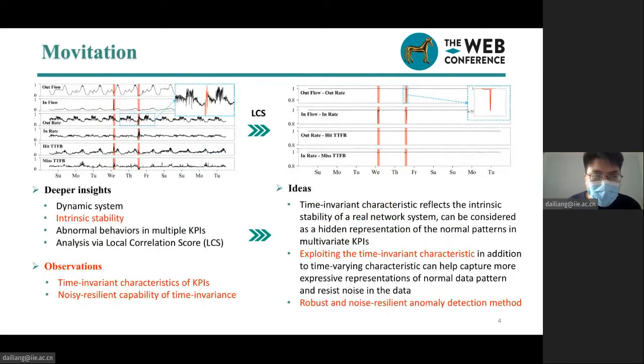So how to build a robust and noise resilient anomaly detection method? To this end, we start with thorough analysis of robust multivariate CDN KPI datasets to get deeper insights. First, CDN is a dynamic system. It exhibits time-varying characteristics from dynamic external environment, such as variation of internet user requests and volatile network conditions. In addition, there is intrinsic stability in the system, determined by limited capacity of servers such as network bandwidth, I/O throughput, and well-defined internal interfaces between different components.